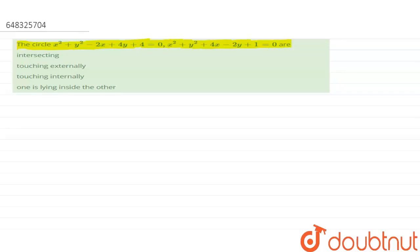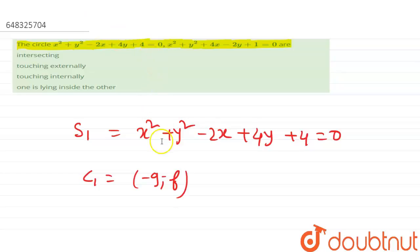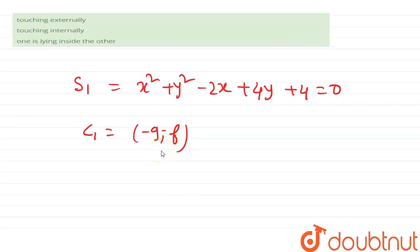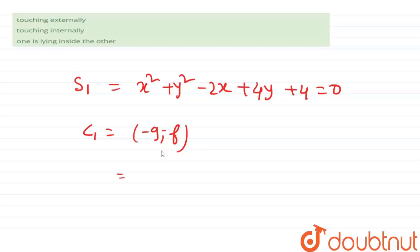Then first circle 1, let s1 equals to x square plus y square minus 2x plus 4y plus 4 equals to 0. Then c1, we know that c1 equals to minus g comma minus f. Then minus g means minus of minus 2 by 2, which is 1, and minus f is minus 2. So c1 is (1, -2).